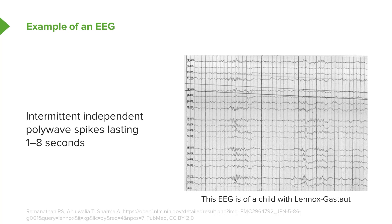Here's an example of an EEG from a patient who has Lennox-Gastaut. You can see intermittent periods of independent polywave spikes lasting roughly one to eight seconds, which is classic and emblematic of that disease.